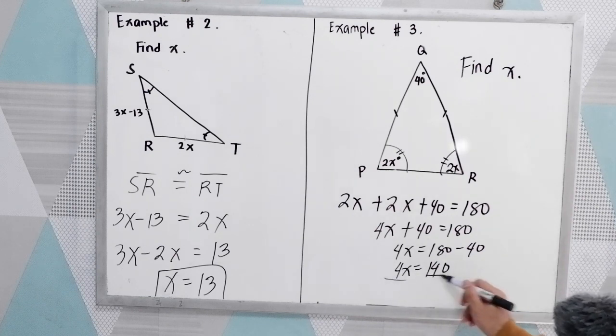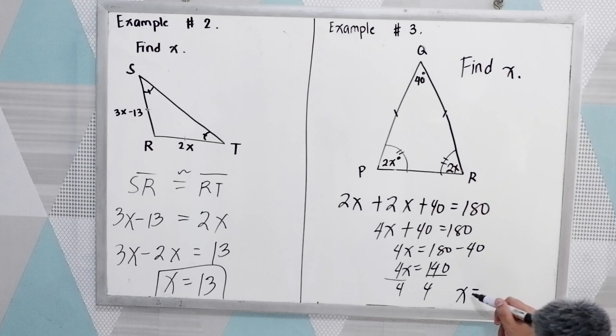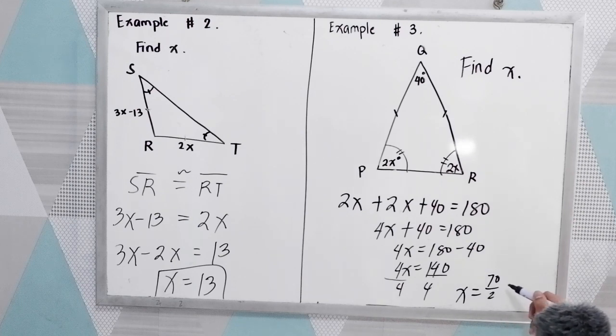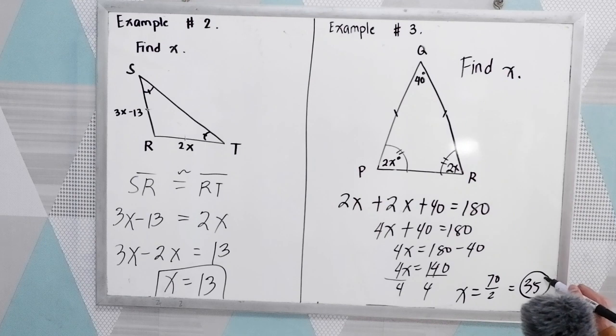Now, to get X, divide by 4. So X is equal to 70 over 2. 70 over 2 is 35. 35 degrees is the value of our X.